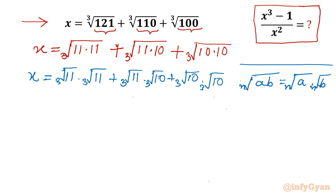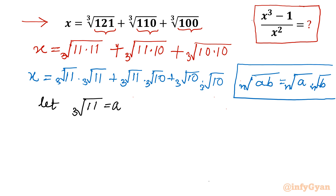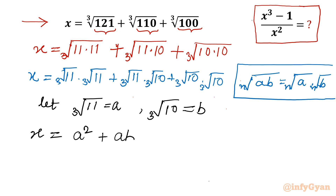Now I will use substitution. We can see cube root of 11 and cube root of 10 are involved, so let cube root of 11 equal a and cube root of 10 equal b. Then x becomes a times a, which is a², plus a times b, which is ab, plus b². So x equals a² plus ab plus b².